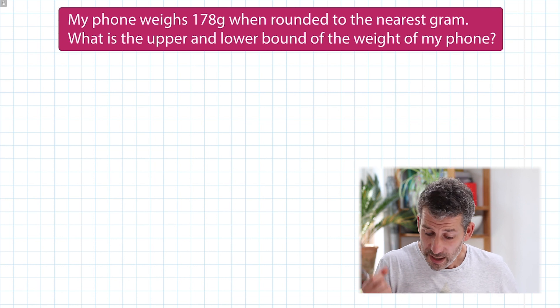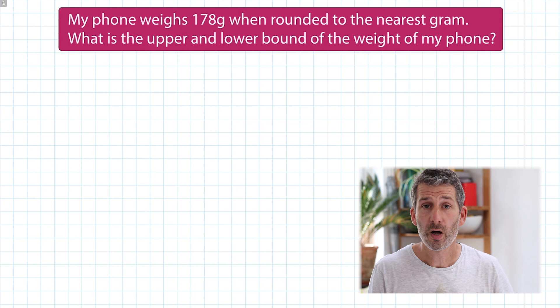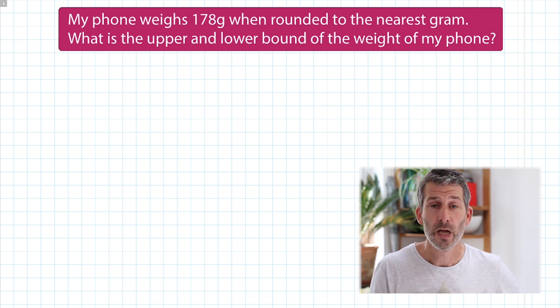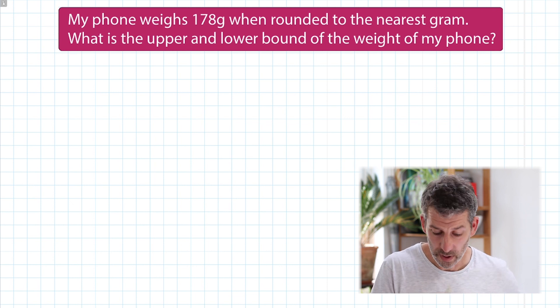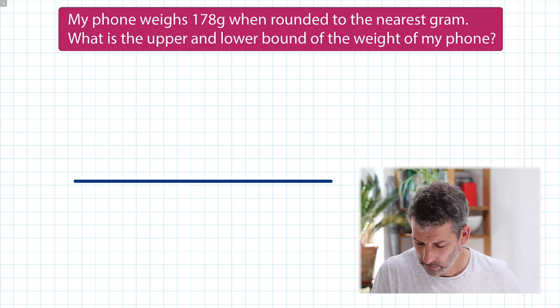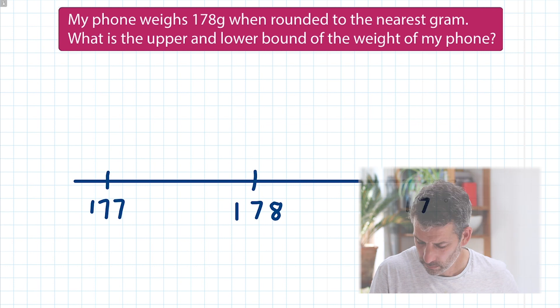I'm going to use a number line with this example. The weight of my phone has been rounded off to the nearest whole number — that's what these scales do. So my number line needs to go up in whole numbers. I've put 178 in the middle because that's what we're told the weight has been rounded off to, then I've gone up one whole number to give me 179 and down one whole number to give me 177. If the weight of my phone was, say, 178.3, that would definitely round off to 178.